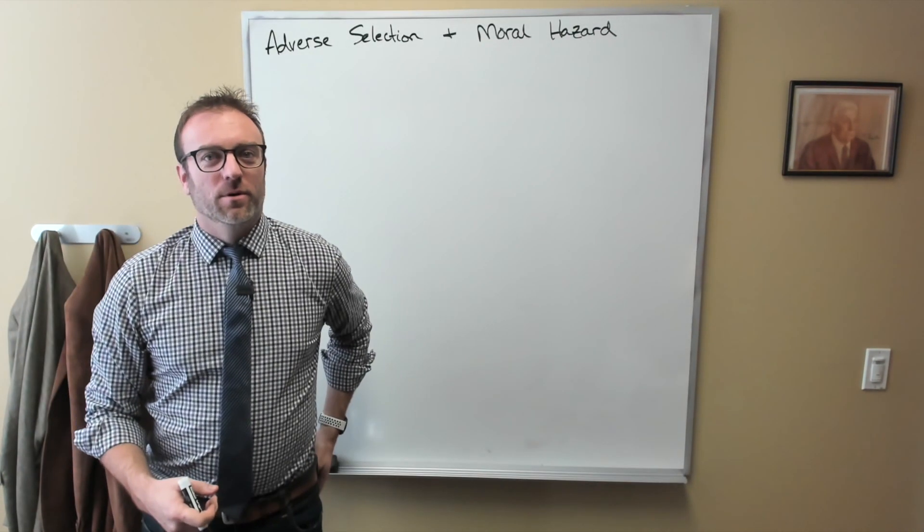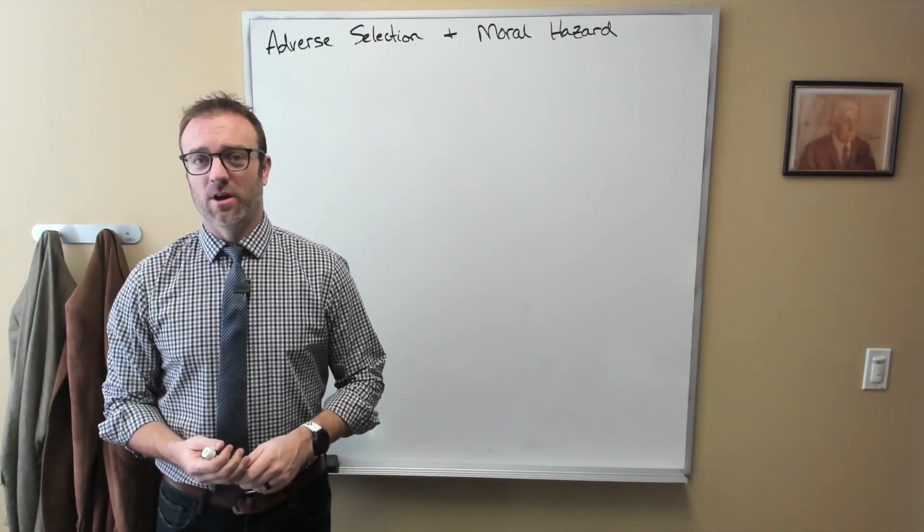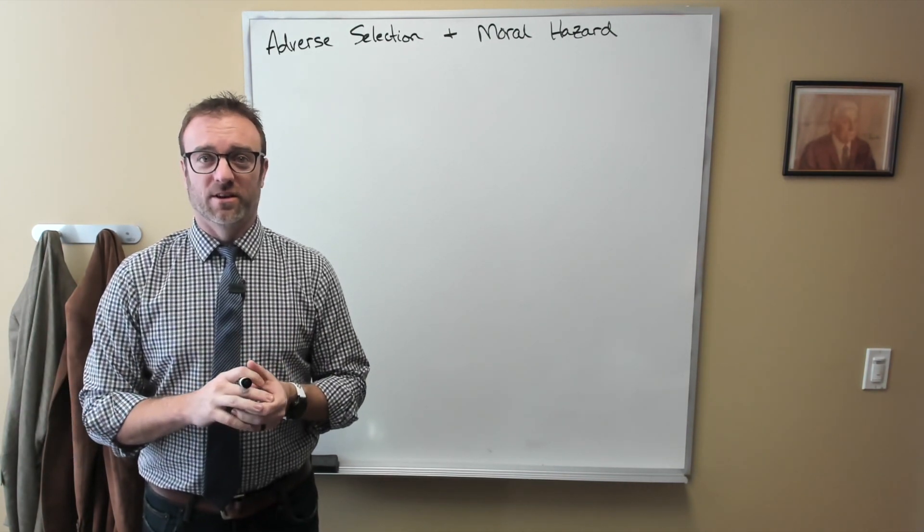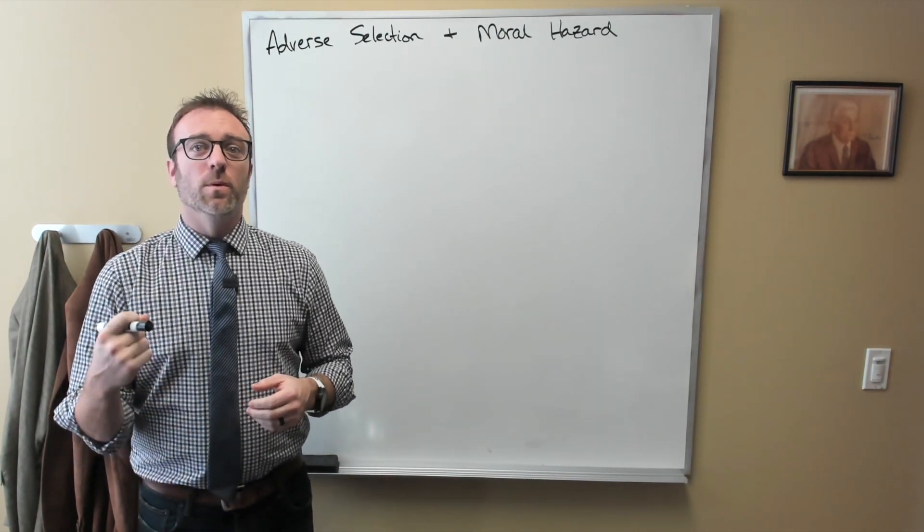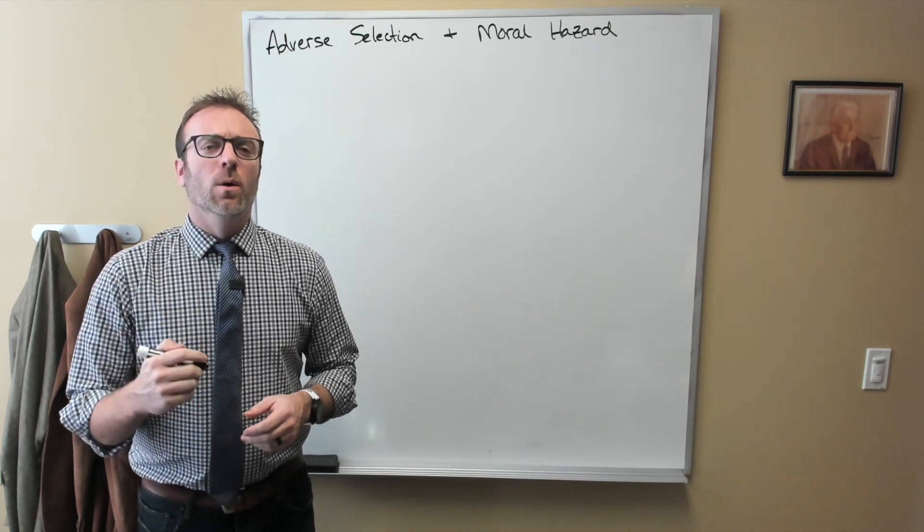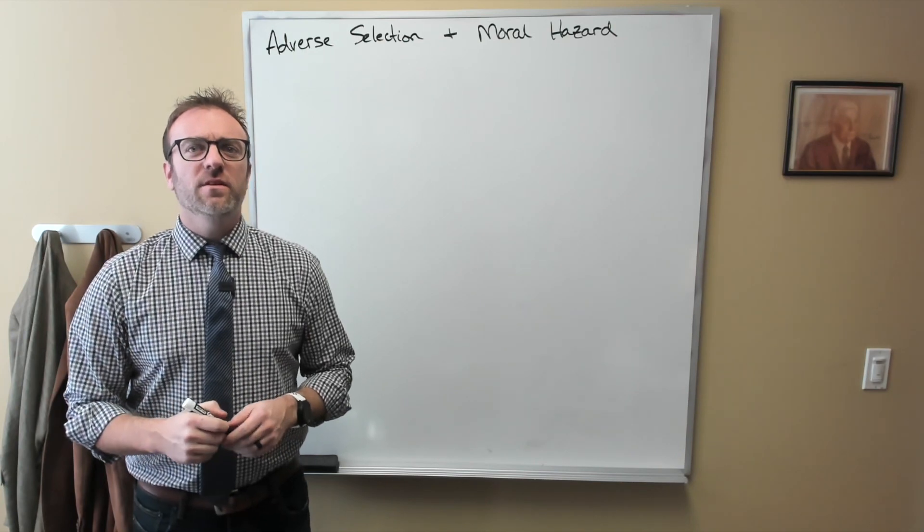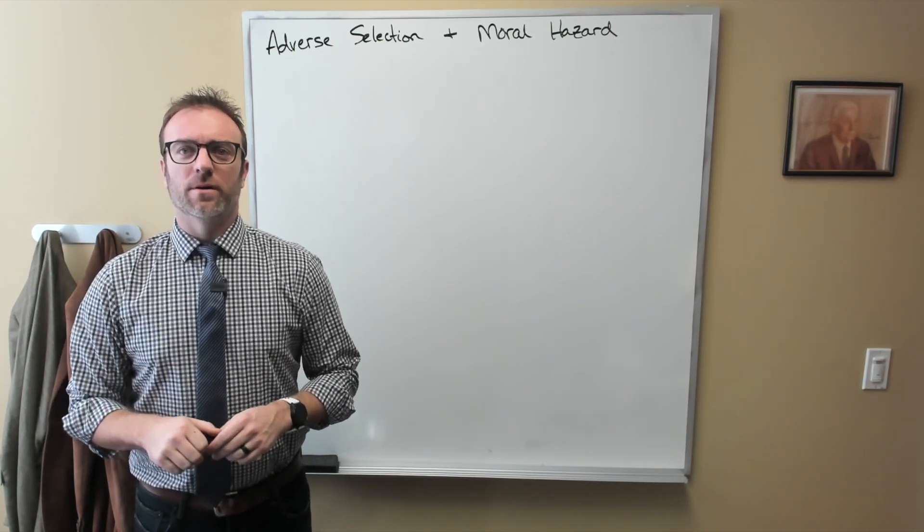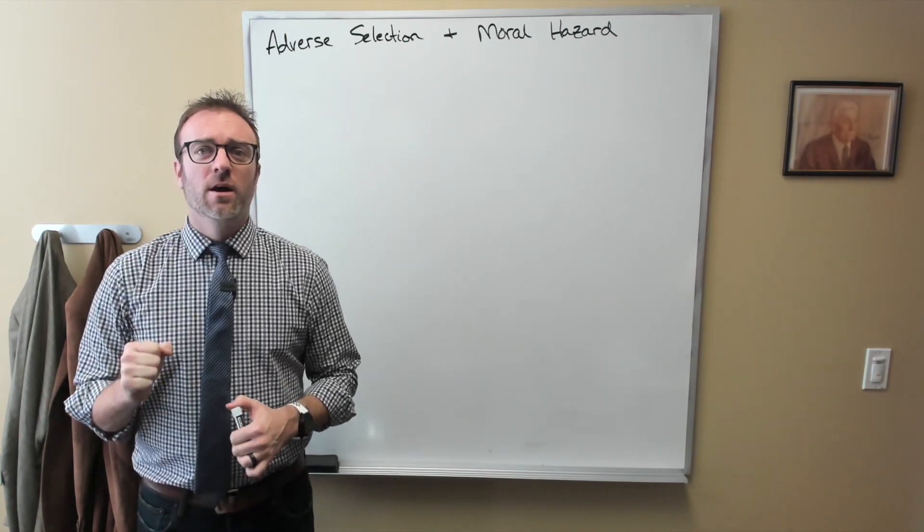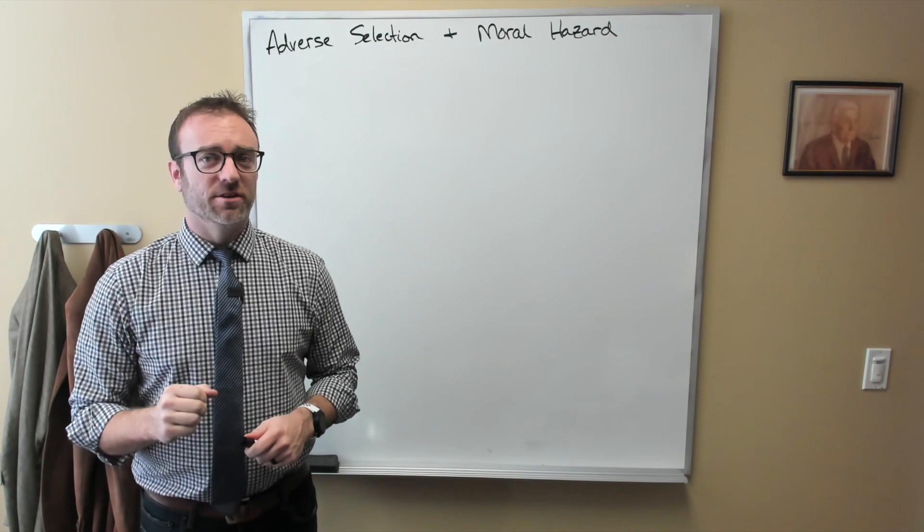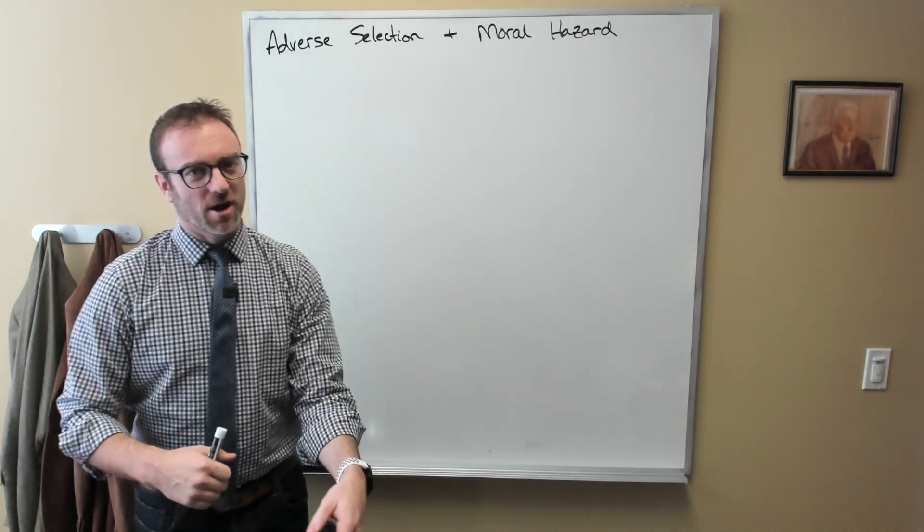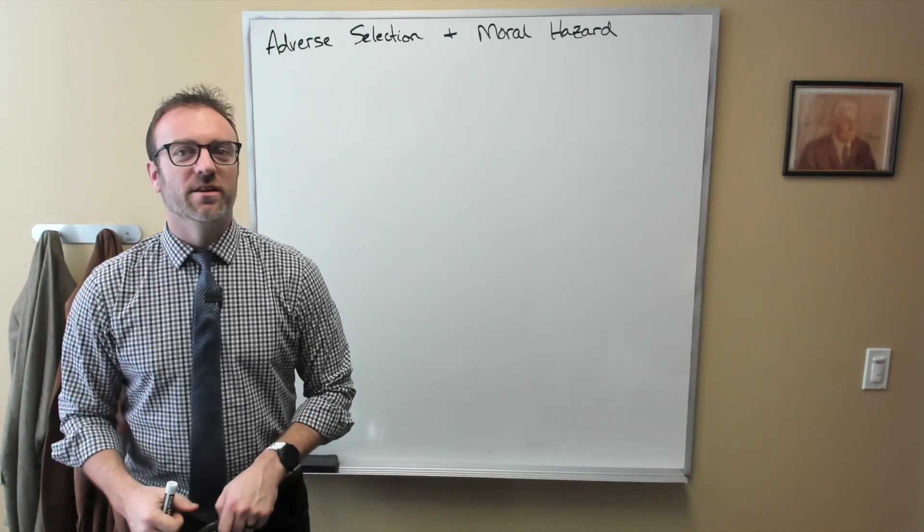So last time we talked about the market for insurance, how insurance companies actually eliminate risk in the world by pooling that risk together, how individual people would be willing to pay more than what is actuarially fair for insurance. We also learned how even if people would be financially better off without the insurance, they are actually happier with the insurance because of the concepts of diminishing marginal utility of income and risk aversion. This should have been a very shocking result, but one that's very true in economics.